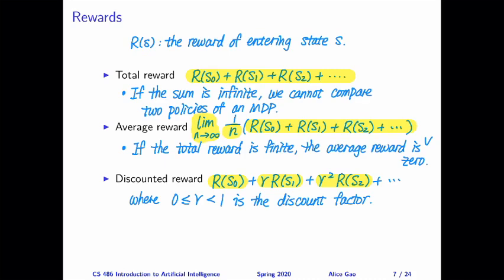So this discount factor is represented by gamma, and it is a number that's greater than or equal to zero and less than one.